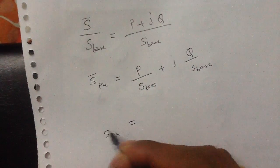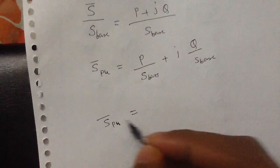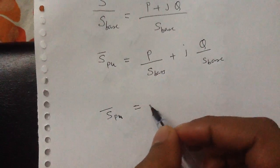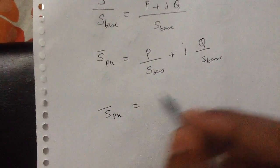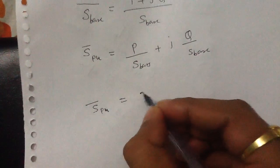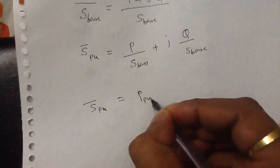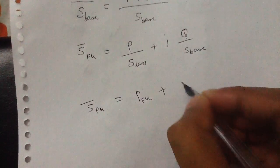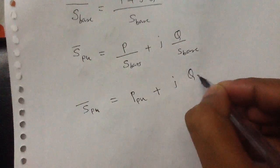The S per unit, the per unit value of the complex power, can be written as P per unit plus j Q per unit.